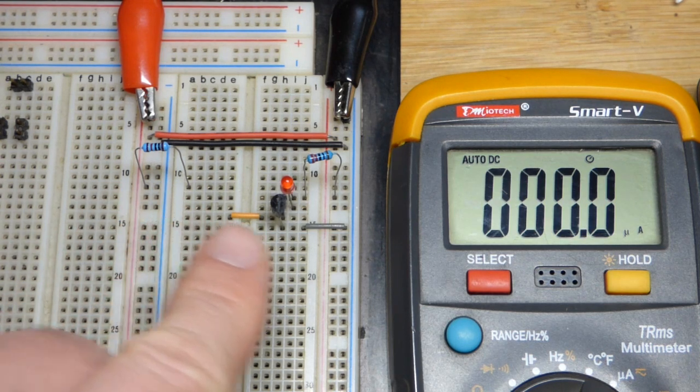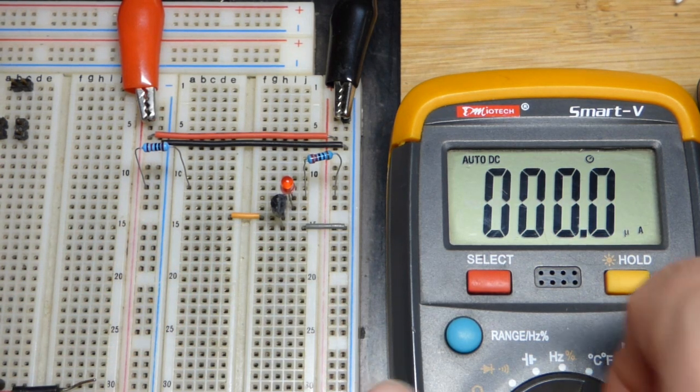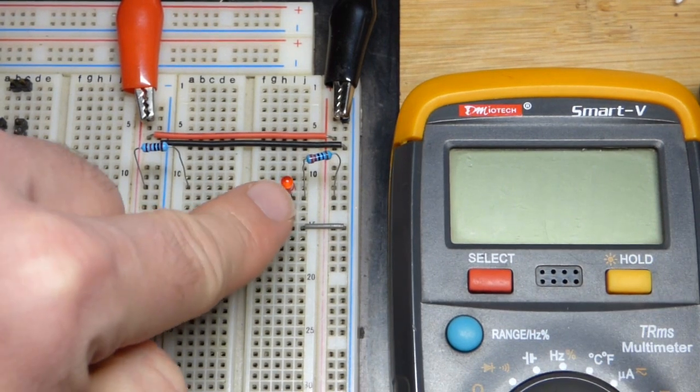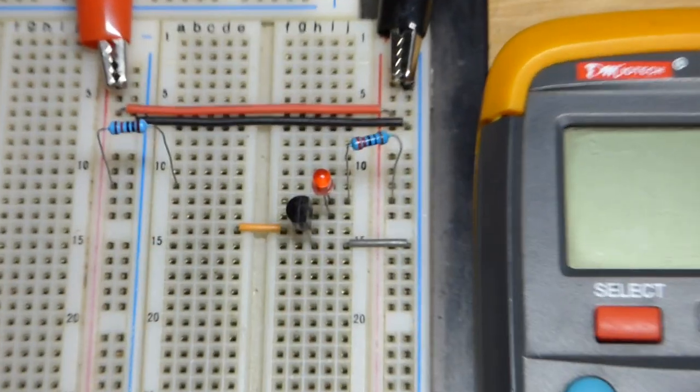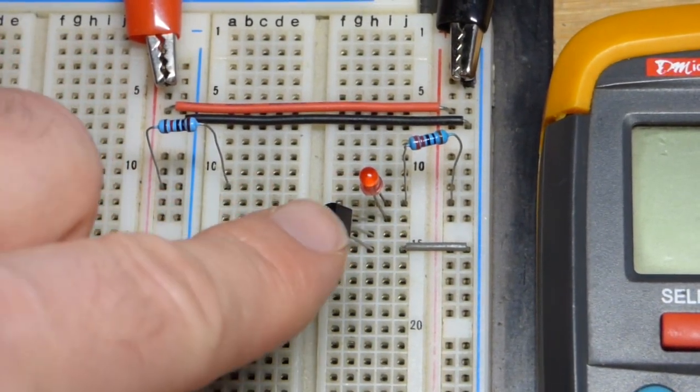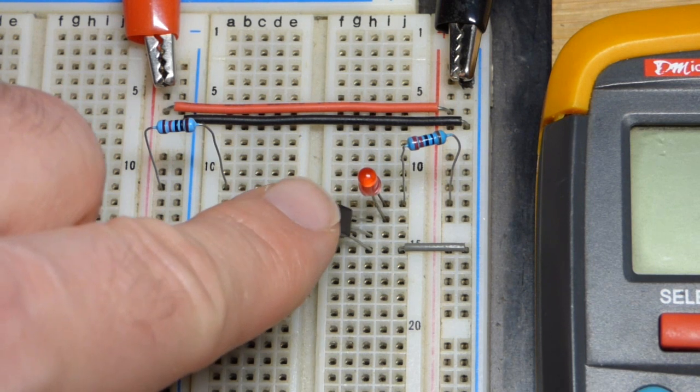Now we need a little bit of current going base to emitter. The exact amount that we need is based on the gain of the transistor. So this is a 2N2222. It probably has a gain of maybe 300, probably like 200 or something, might be as low as 100.